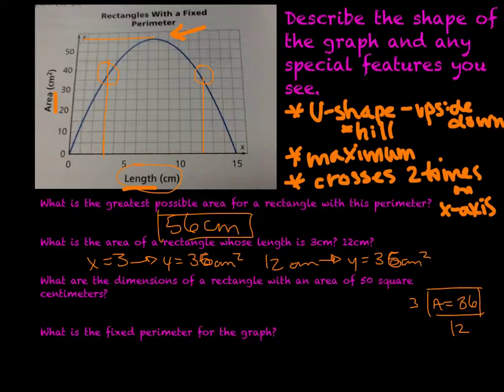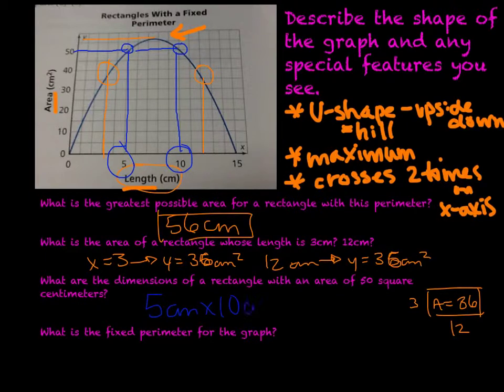What are the dimensions of a rectangle with an area of 50 square centimeters? If I look at the 50 line, I need to figure out some dimensions. We can see there's a cross here and a second cross here. So now we can go down and look at my x-axis, and see that we have 10 and 5. So the dimensions of our rectangle with an area of 50 square centimeters is a 5 centimeter by 10 centimeter rectangle.